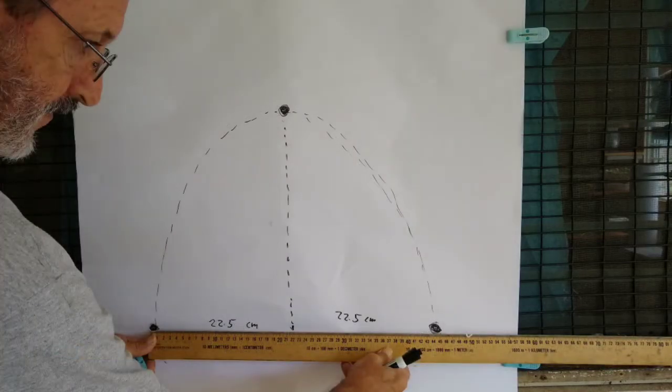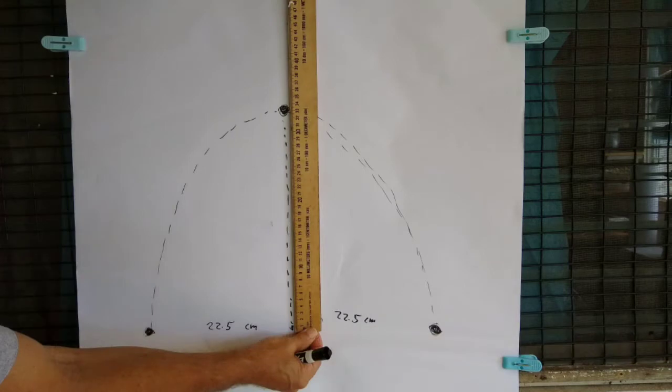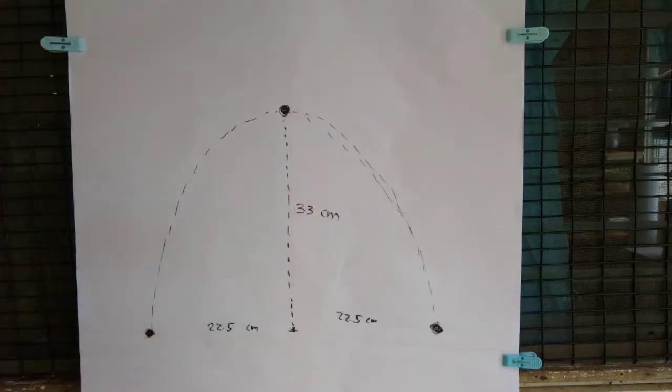So I've got two roots, one at 22.5 negative, one at 22.5 positive, and I have a vertex sitting on the y-axis at 33 centimeters.